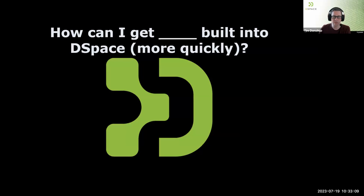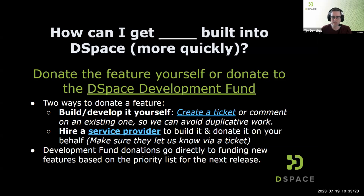If you have a feature you need built into DSpace, the options are to donate the feature yourself or look at the DSpace Development Fund. We take volunteer work from anyone — just create a ticket so we don't have two people building the same thing. Service providers can also be hired to build things on behalf of institutions without developers; many larger service providers build a feature, donate it back, and it comes out in the next release. The development fund can also go towards funding new features based on steering group priorities.